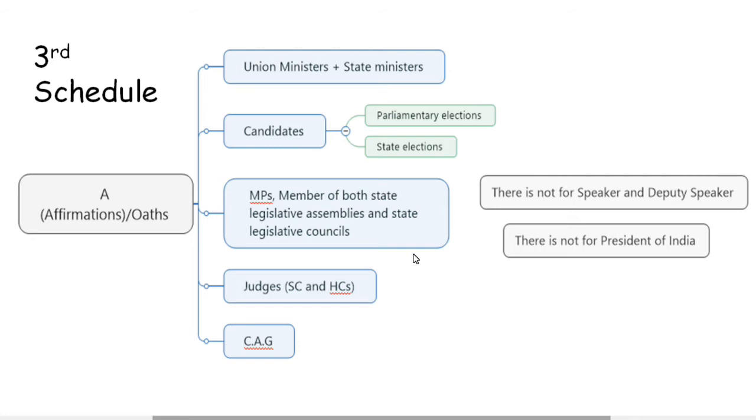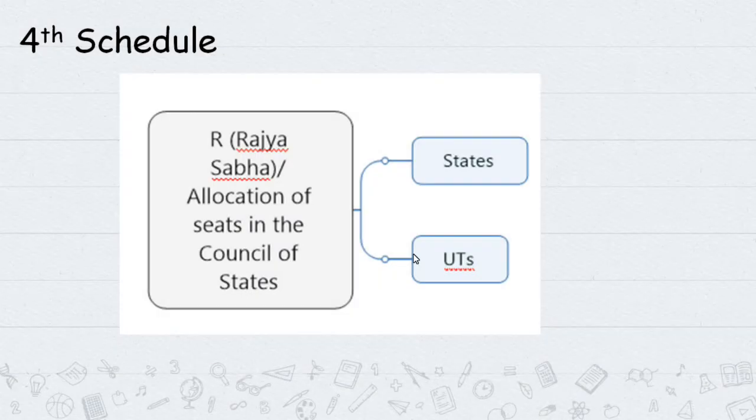The Fourth Schedule covers allocation of seats in the Council of States (Rajya Sabha). It specifies how many Rajya Sabha seats each State gets. Each State's seat allocation is determined here, and representatives from states are allocated based on this schedule.